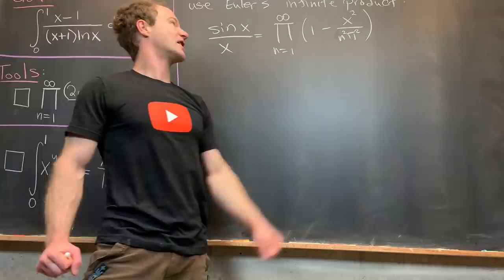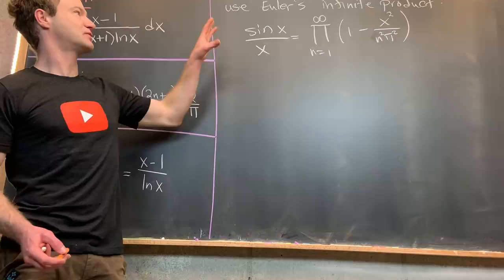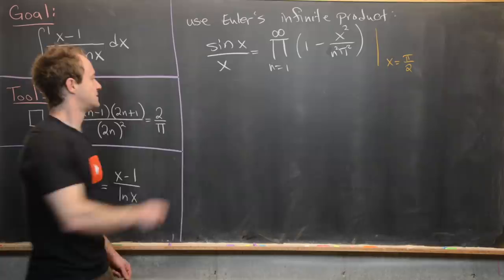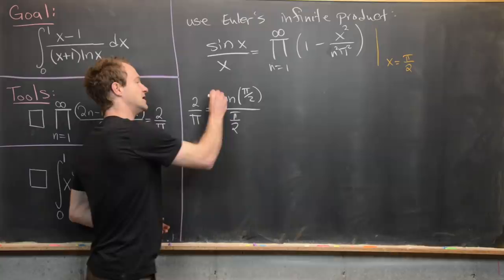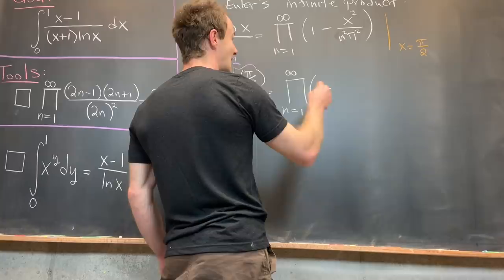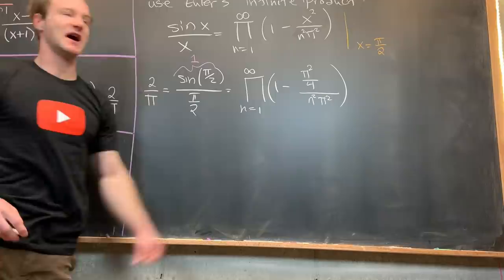If we evaluate x at an integer multiple of pi, the corresponding factor cancels out. Now we evaluate this infinite product representation at x equals pi over 2. That gives us 2 over pi equals sine of pi over 2 over pi over 2, which is clear since sine of pi over 2 is 1. On the right-hand side we have the infinite product n equals 1 to infinity of 1 minus pi squared over 4 over n squared times pi squared.